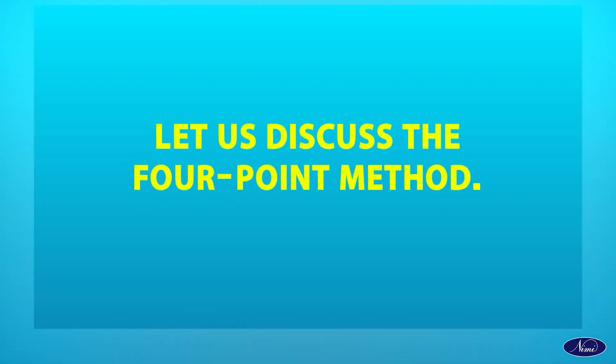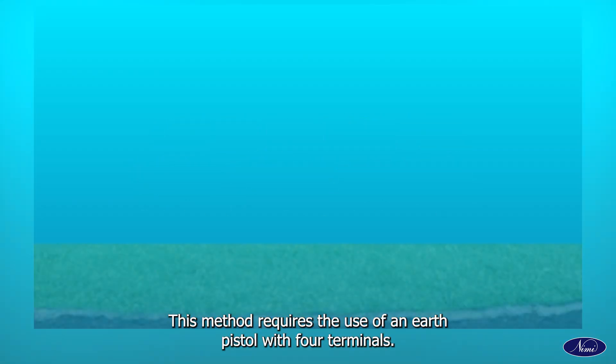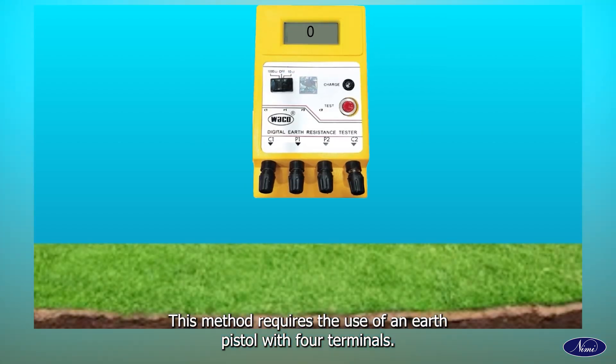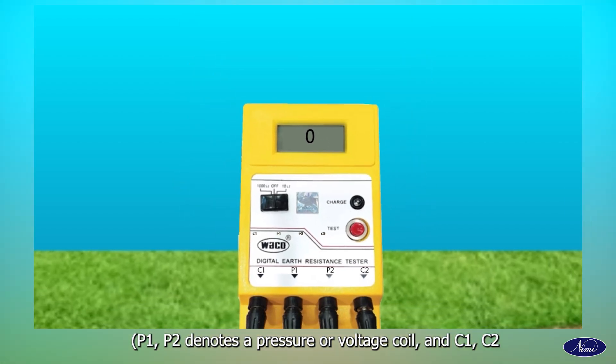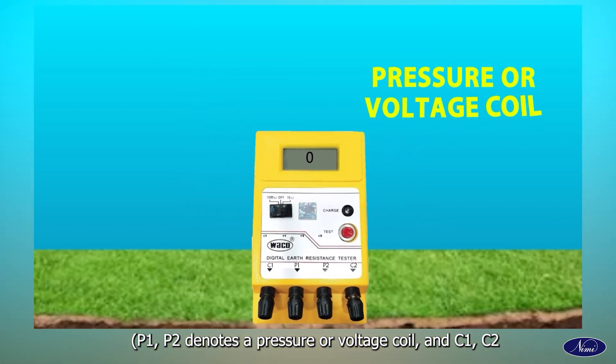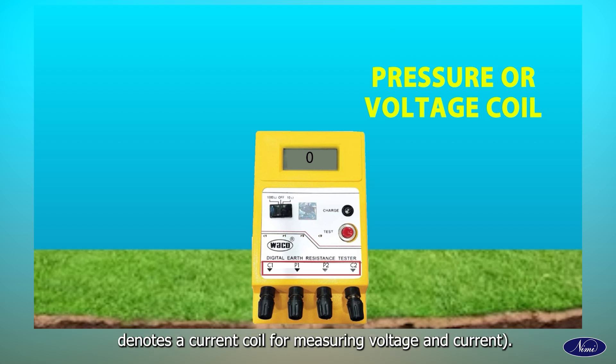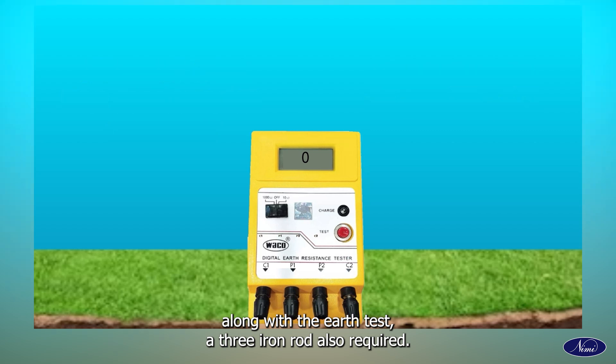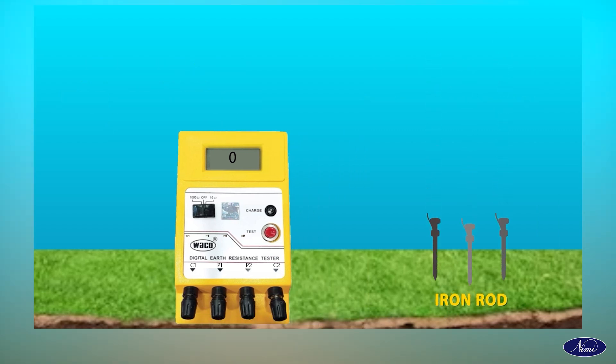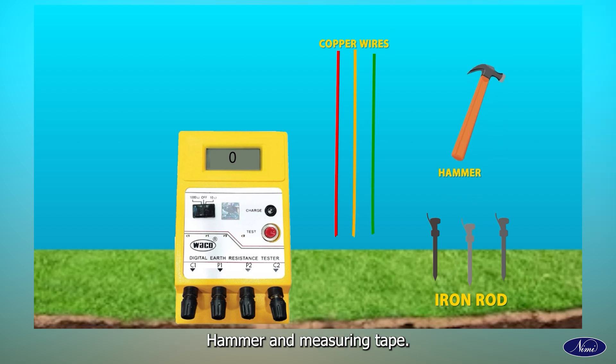Let us discuss the 4-point method. This method requires the use of an Earth Tester with four terminals: P1, P2, C1 and C2. P1 and P2 denote pressure or voltage coil and C1, C2 denote current coil for measuring current. Along with the Earth Tester, three iron rods are also required. The Earth's length could be 2 feet with a diameter of 12 mm, 10 meters of PVC insulated copper wires, hammer and measuring tape.